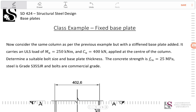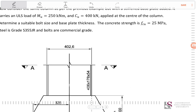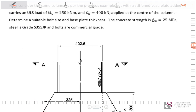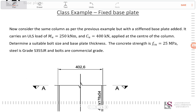Consider the same column as per the previous example — also on YouTube — but with a stiffened base plate added. It carries an ultimate limit state moment of 250 kilonewton-metres and a compressive load of 400 kilonewtons applied at the centre of the column. Determine a suitable bolt size and base plate thickness. The concrete strength is 25 MPa, the steel grade is S355 JR, and the bolt grade is commercial quality — 200 MPa yield and 365 MPa ultimate stress.